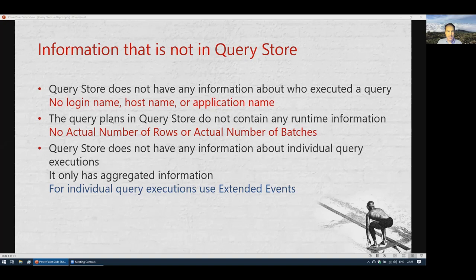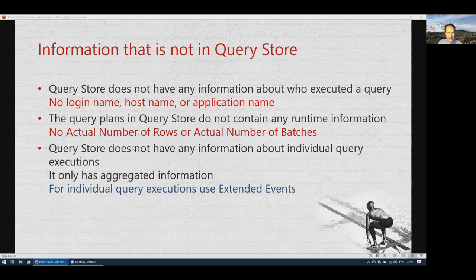The query plans in Query Store do not have any runtime information — things you see in actual execution plans like actual number of rows or actual number of batches are not available. The reason is that a plan is only stored once in Query Store, and the actual row counts differ per execution, so they cannot be included.